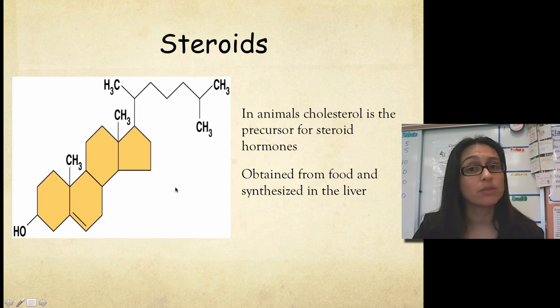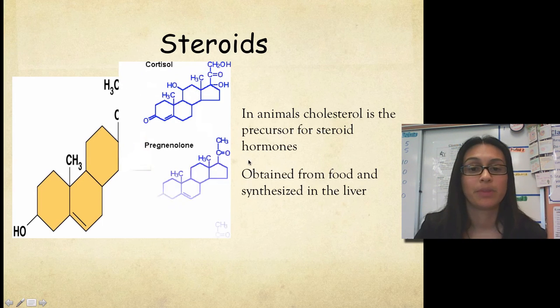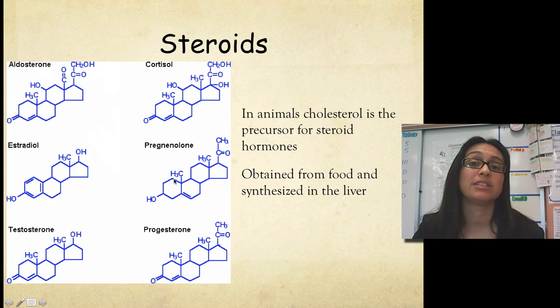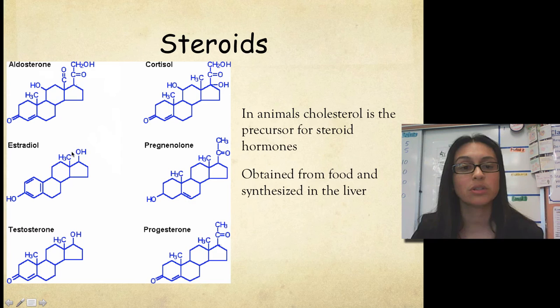We can get cholesterol, of course, by eating and also by synthesizing inside of our liver. Now here, here's a picture of six different steroid hormones. So you can tell when you look at each one, they have those four carbon rings as part of its skeleton, as part of its structure, and then you look at the different chemical groups, and to each one, they are slightly different.